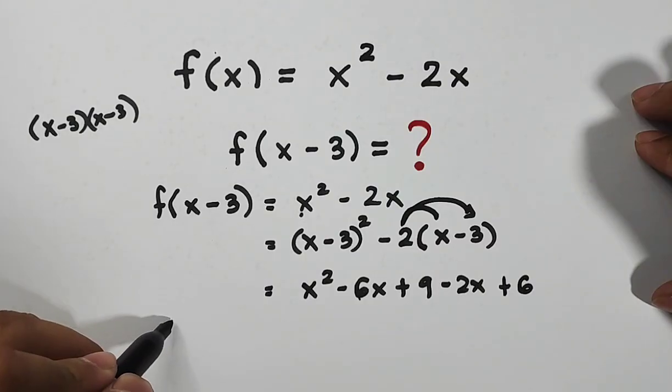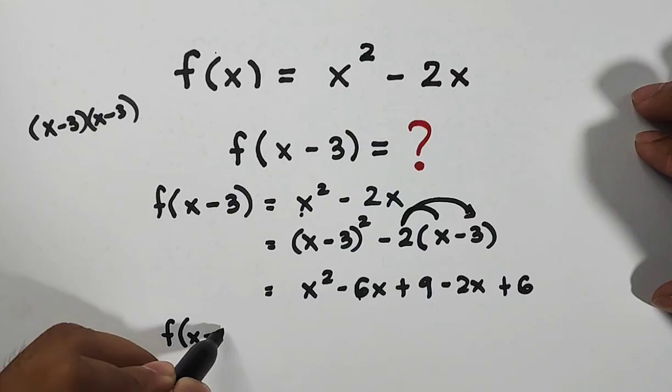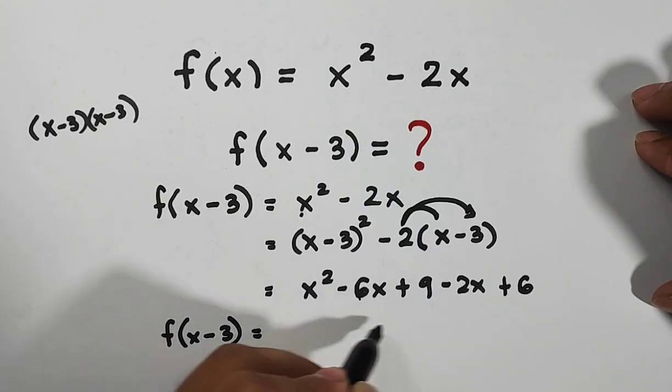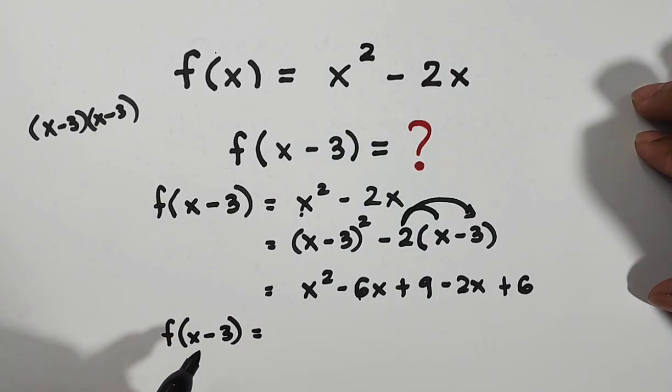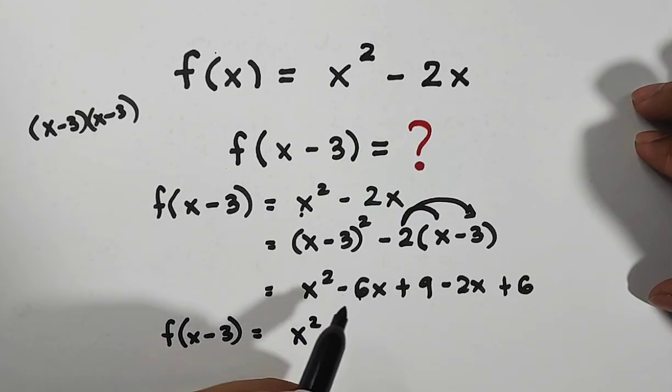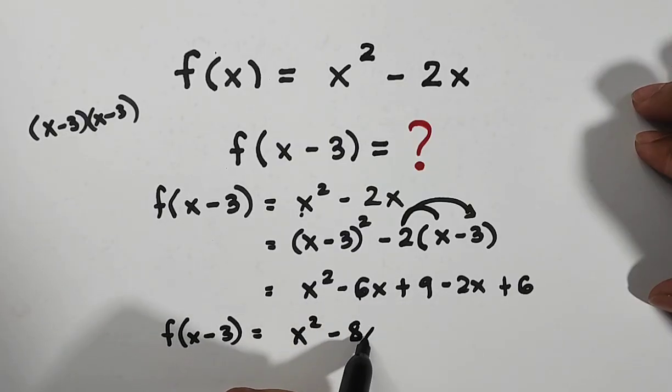So what we need to do here is to copy this f(x - 3) and then combine like terms to simplify your answer. Since there's no common term, x squared will be x squared. For x terms, we have negative 6x minus 2x, that is negative 8x.